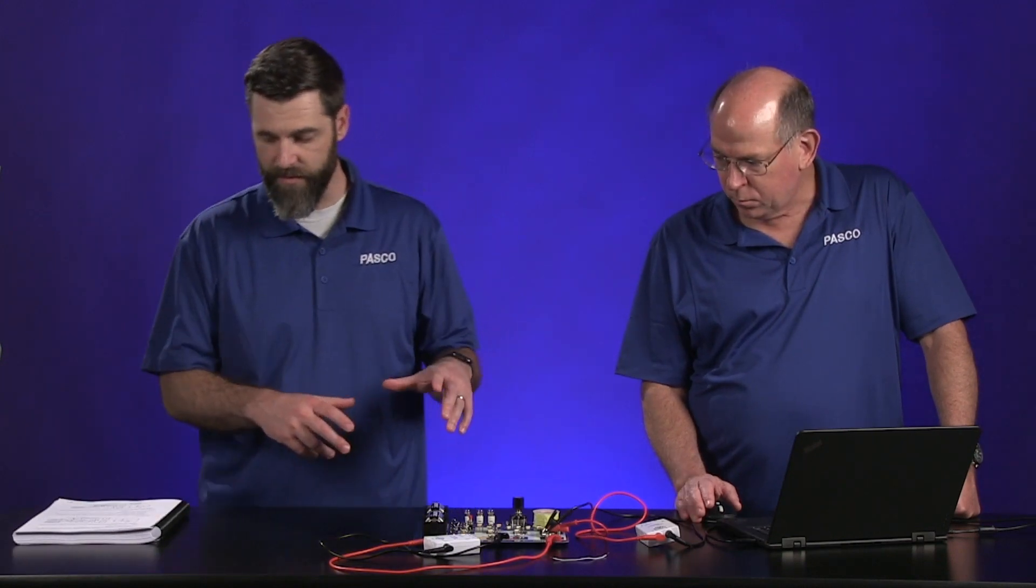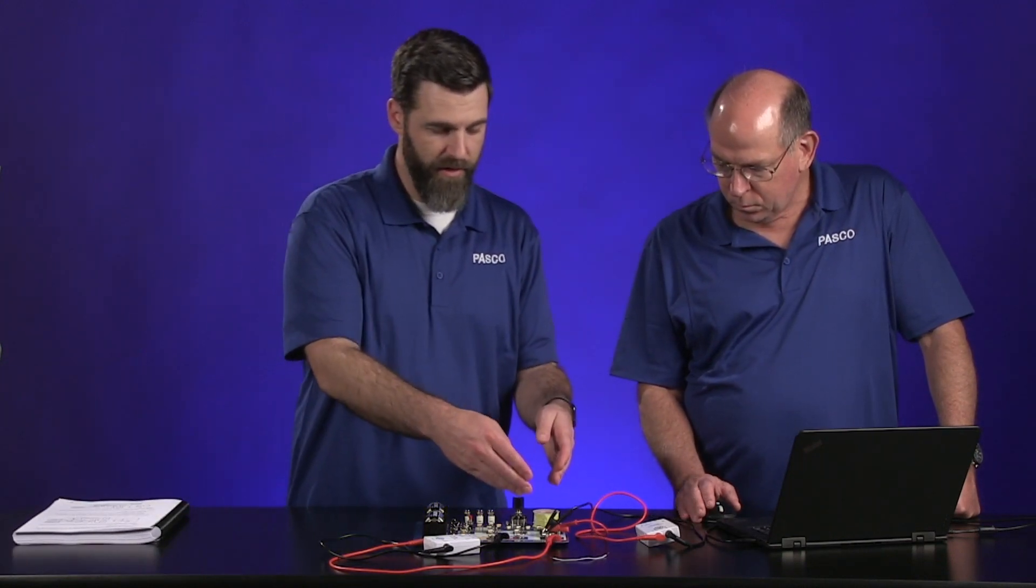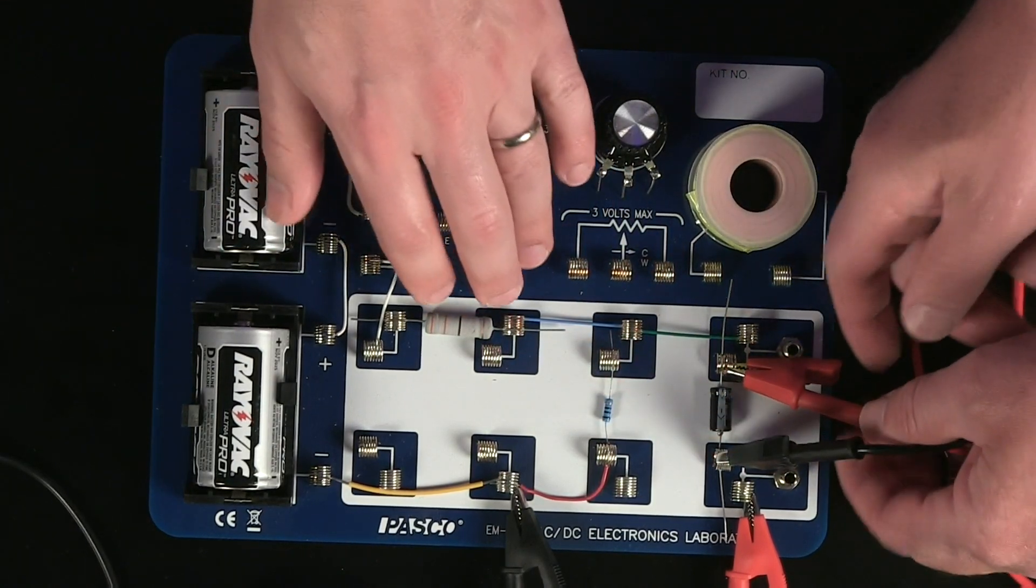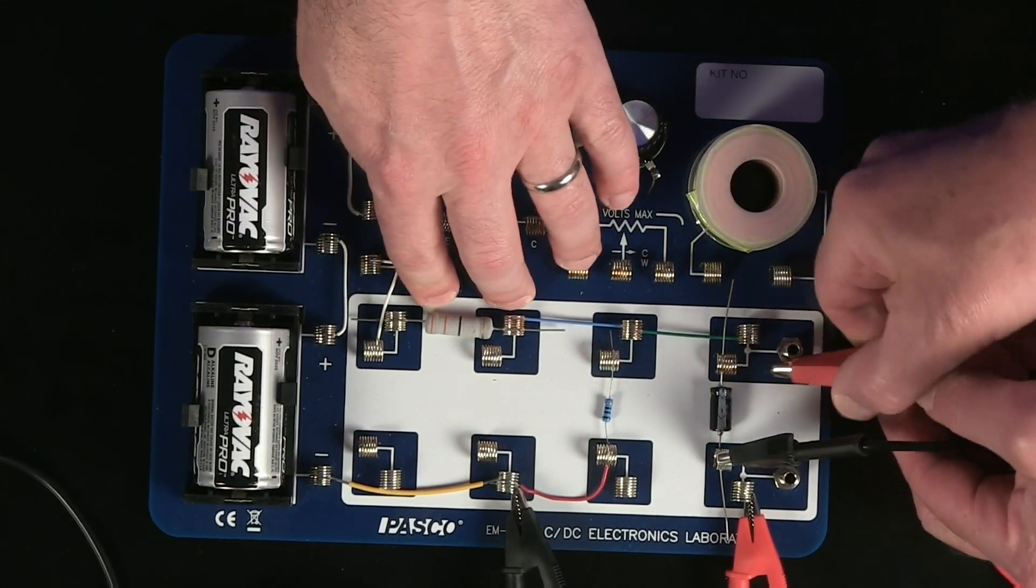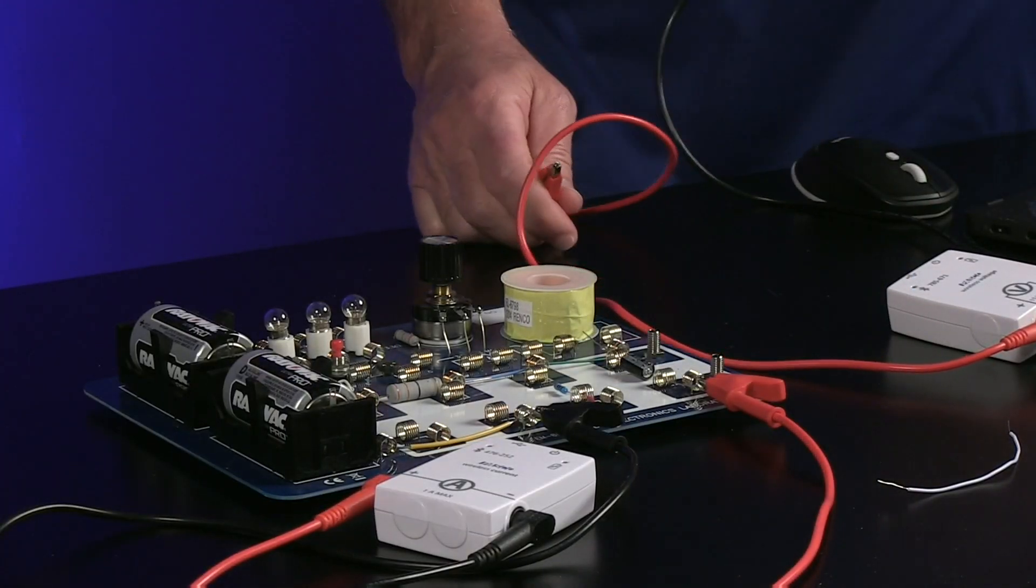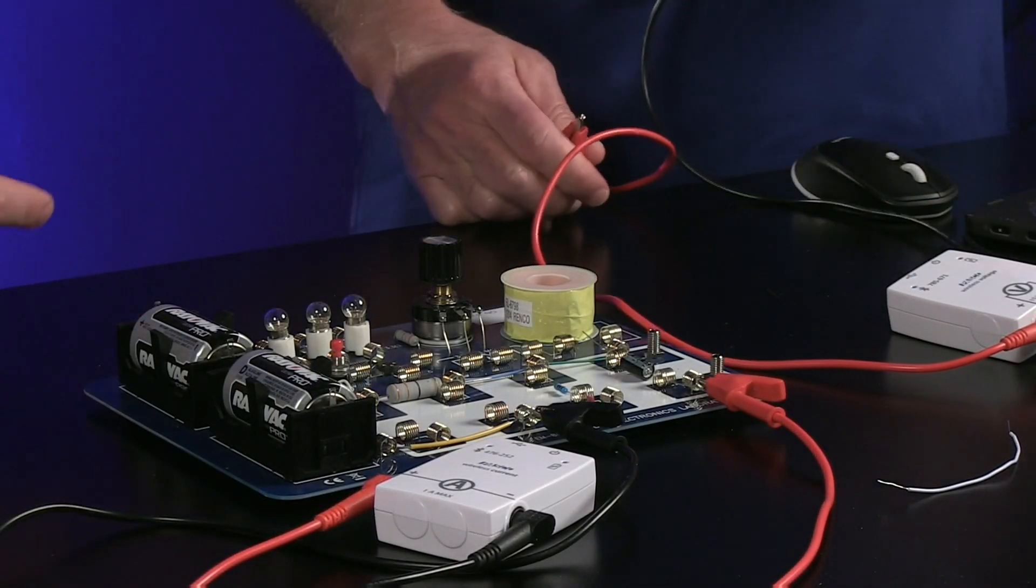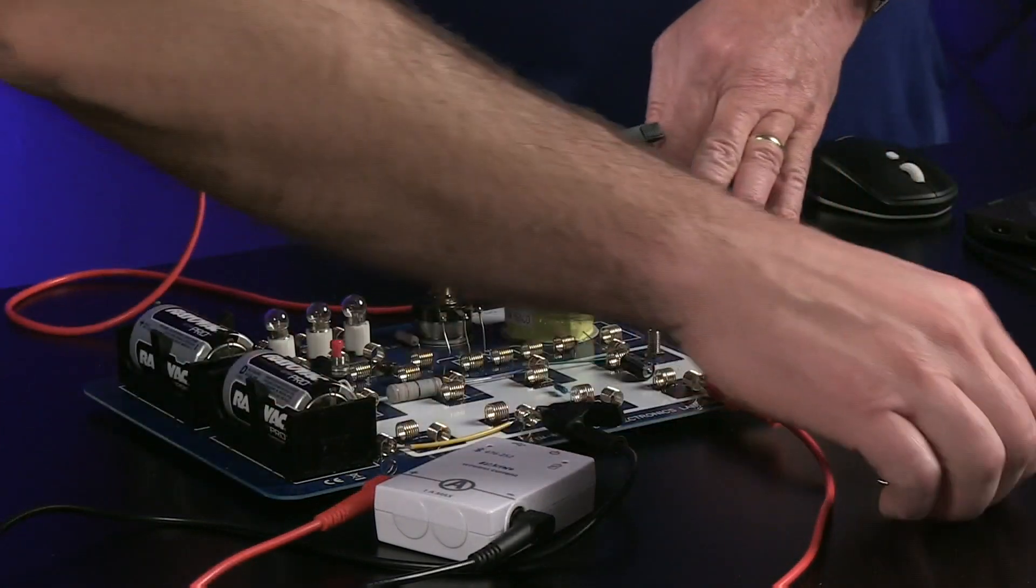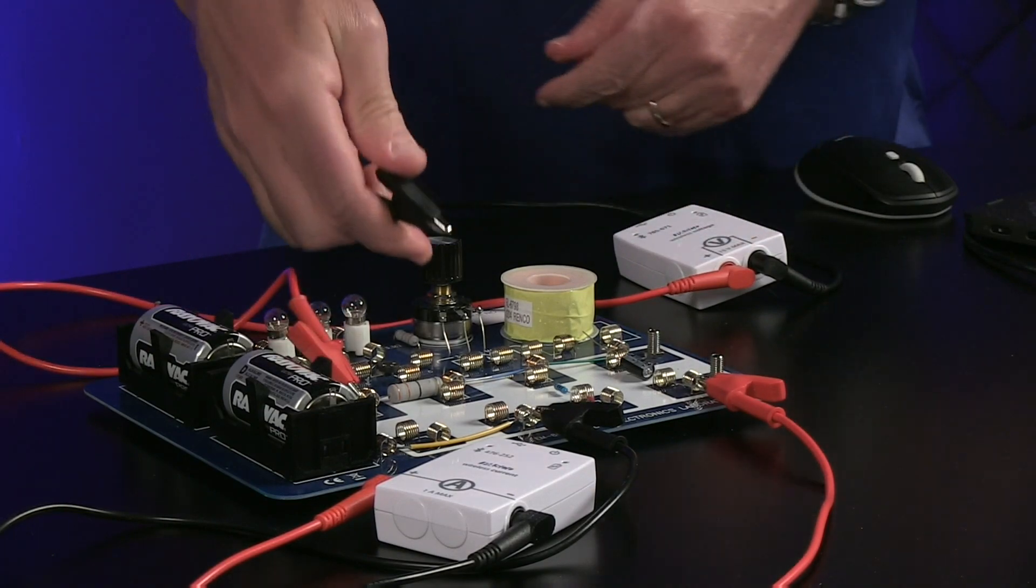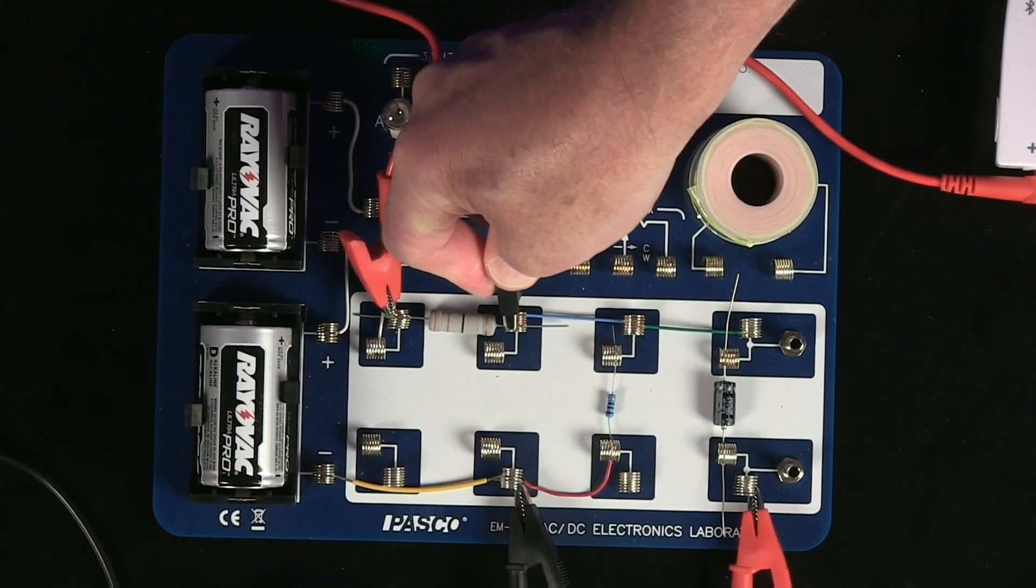Part two has us instead of measuring the voltage and current across and through the capacitor, we're going to move this to our 33 ohm resistor right here. So we'll measure the voltage across the resistor and then through the resistor. And so just like you had on the capacitor, we'll connect those leads in parallel across that resistor.